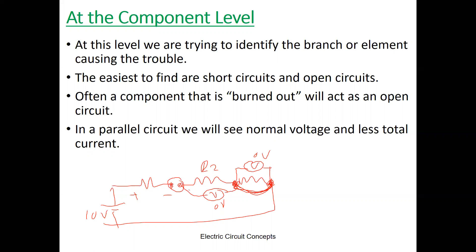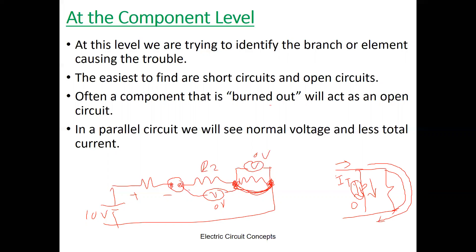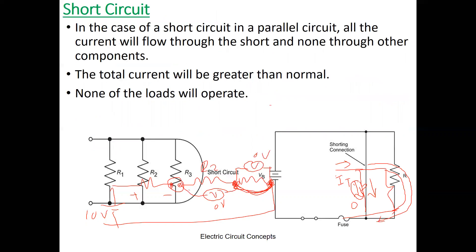Often a component that is burned out will act as an open circuit. In a parallel circuit with an open branch, we will see normal voltage but less total current, because no current flows through that open branch. Most of IT flows through the remaining resistors, with the open branch carrying nearly zero current.